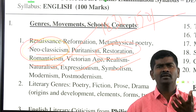As far as these bits are concerned — based on Renaissance and Reformation you may get 3 to 5 bits; Metaphysical Poetry, 1 or 2; Neoclassicism, Puritanism, Restoration, 3 to 5 bits; Romanticism, definitely 5 to 8 bits; Victorian Age, definitely 5 to 8 bits; Realism, Naturalism, Expressionism, Symbolism — 1 each; Modern period, definitely 10 bits; and Modern and Postmodernism, 10 to 15 bits. Minimum 50% of the bits will come from modern and post-modern periods.